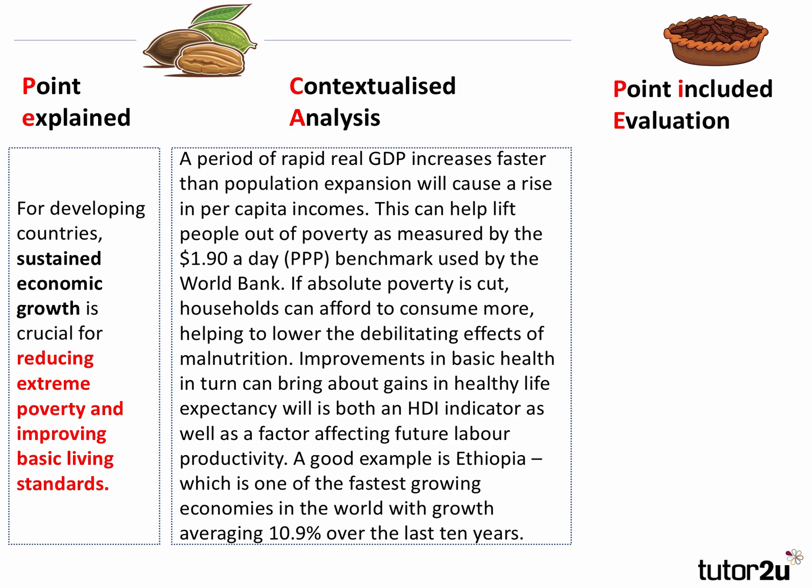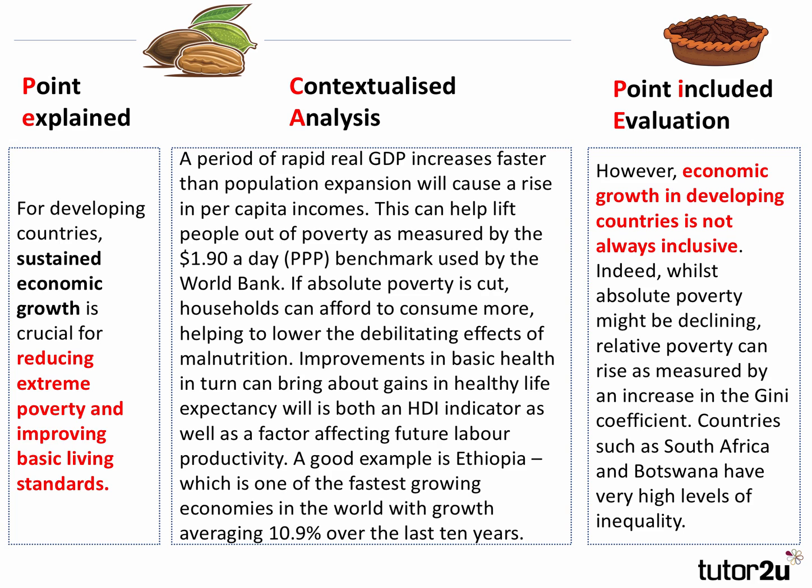Improvements in basic healthcare — in turn, this chain of reasoning phrase — can bring gains in healthy life expectancy, which is both an HDI indicator as well as a factor affecting productivity. A good contextualized example is Ethiopia, which has been one of the fastest-growing countries in the world with growth of over 10% over the last 10 years, with per capita incomes going up from about $600 per year to nearly $5,000.